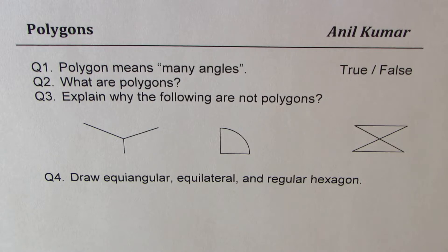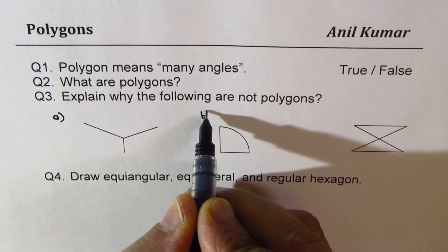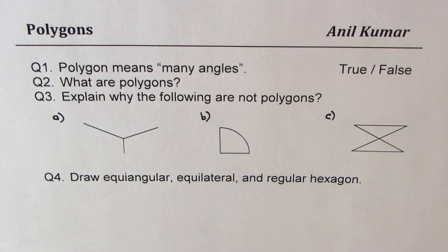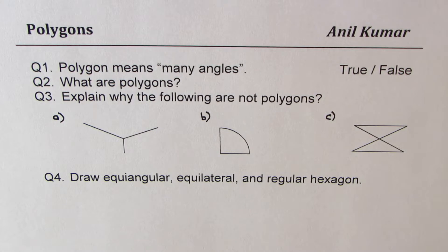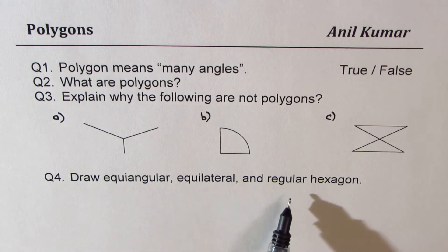The very first question is: polygon means many angles — is it true or false? Question number two: what are polygons? Question number three: explain why the following figures are not polygons. Question number four: draw an equiangular, an equilateral, and a regular hexagon — three different figures, one with equal angles, one with equal sides, and a regular hexagon. All should be hexagons.